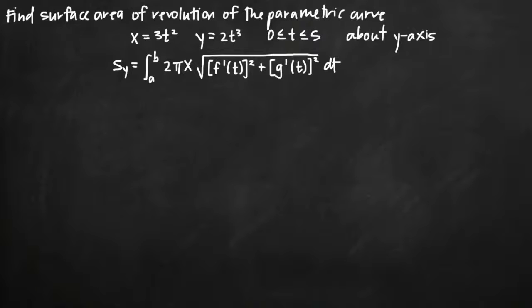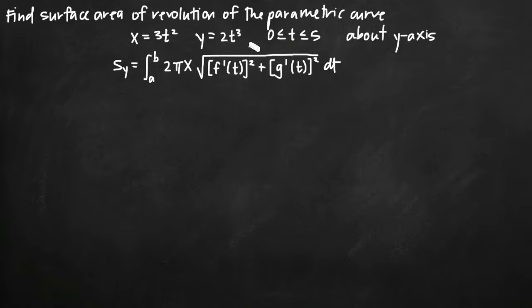Today we're going to be talking about how to find the surface area of revolution of the parametric curve. In this particular problem, we've been given the parametric curve defined by the equations x equals 3t squared and y equals 2t cubed. We've been told to find the surface area of revolution on the interval t greater than or equal to 0 and less than or equal to 5, when we're rotating about the y-axis.